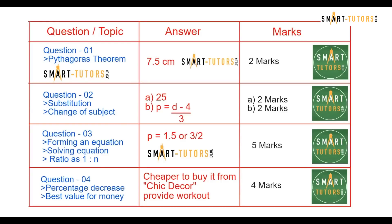Question number 1. It was a Pythagoras theorem. The answer is 7.5. Two marks question. Question number 2. Substitution and the B part followed by a change of subject. The answers are given. Two marks and two marks. Four marker question.